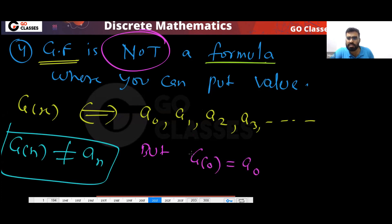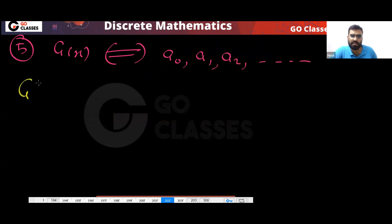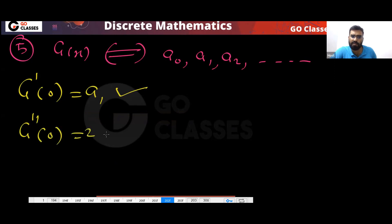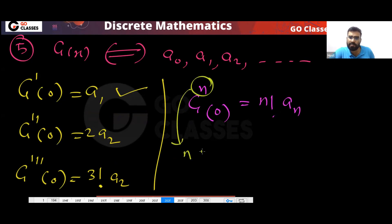However, G(0) = a0 — that you can apply. The fifth point: if you have a generating function for a sequence a0, a1, a2, ..., then G'(0) = a1, G''(0) = 2!·a2, G'''(0) = 3!·a3, and in general, the nth derivative at zero equals n!·an.